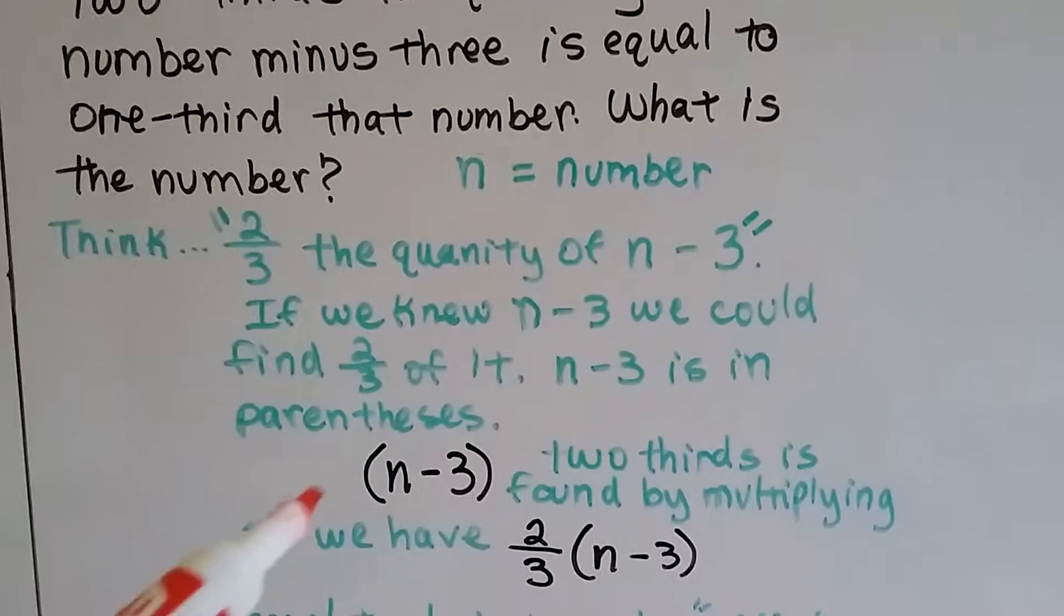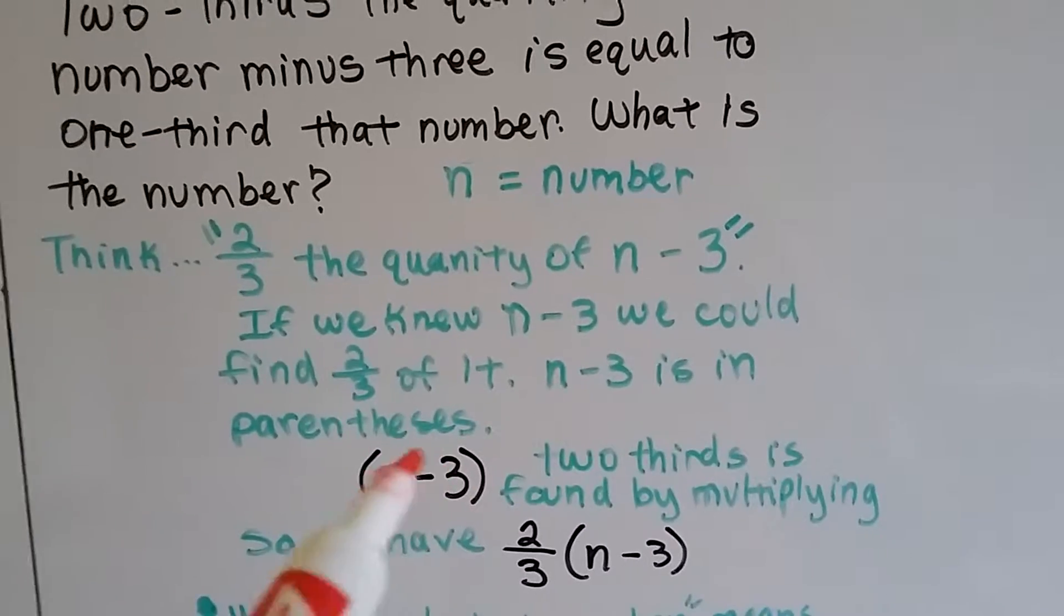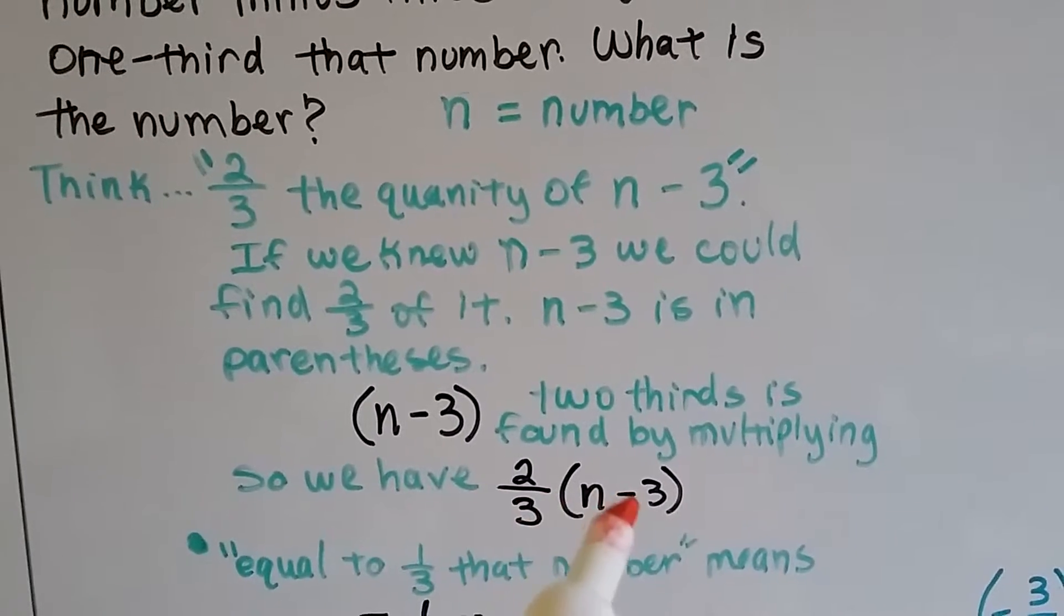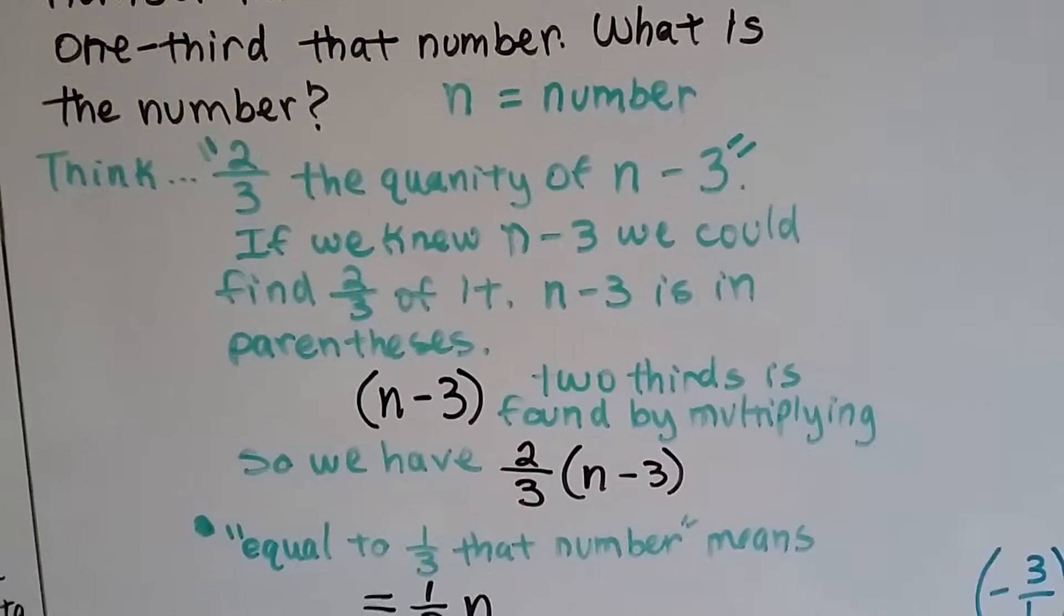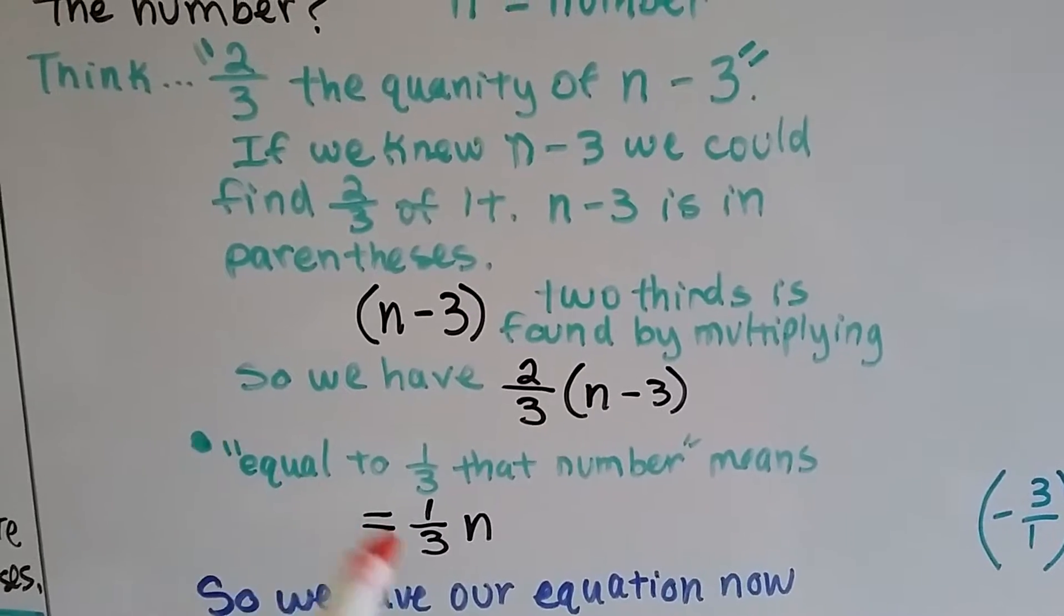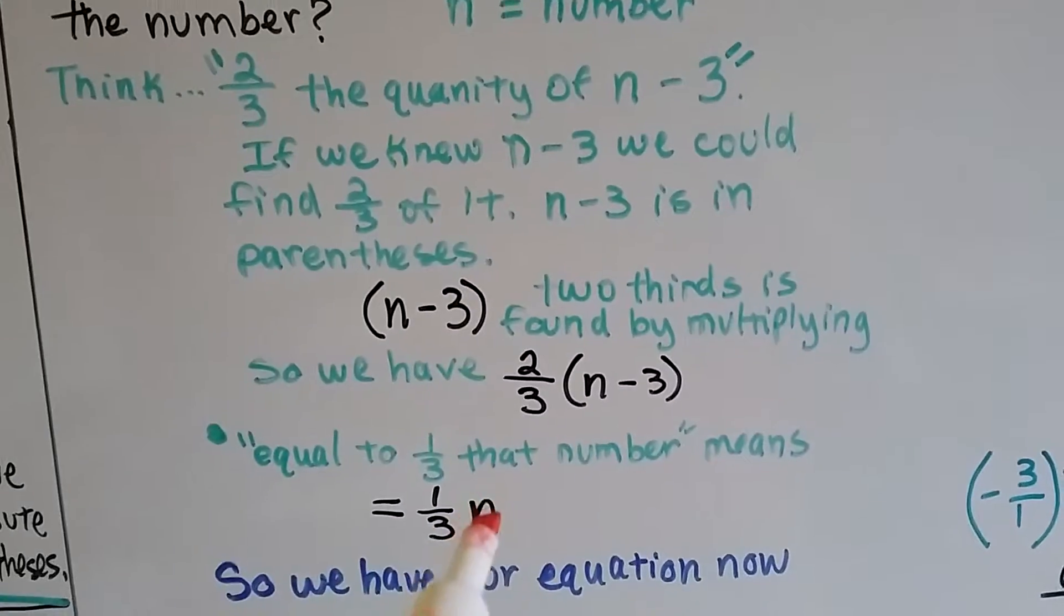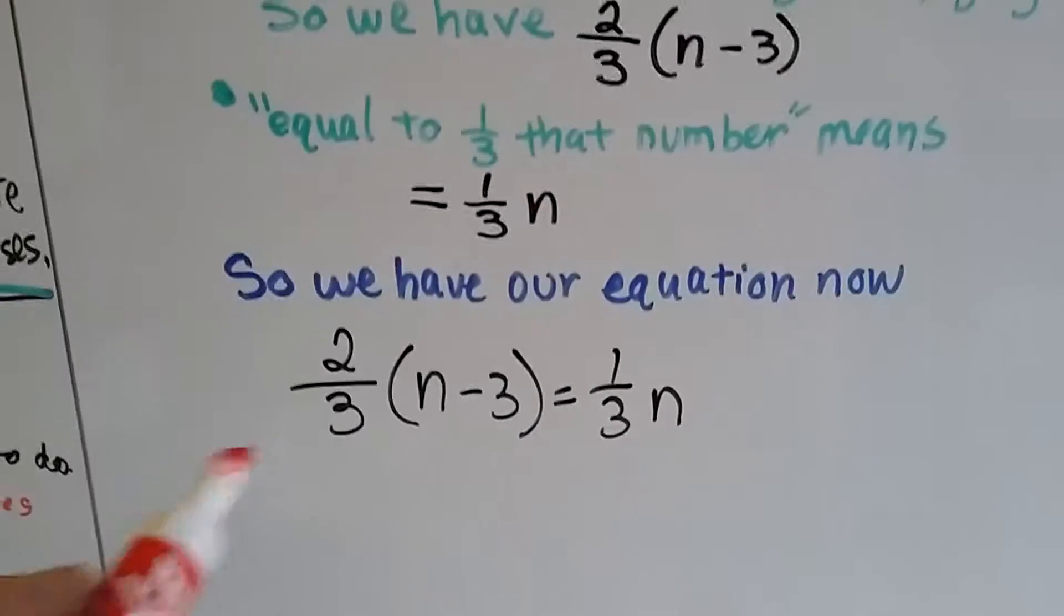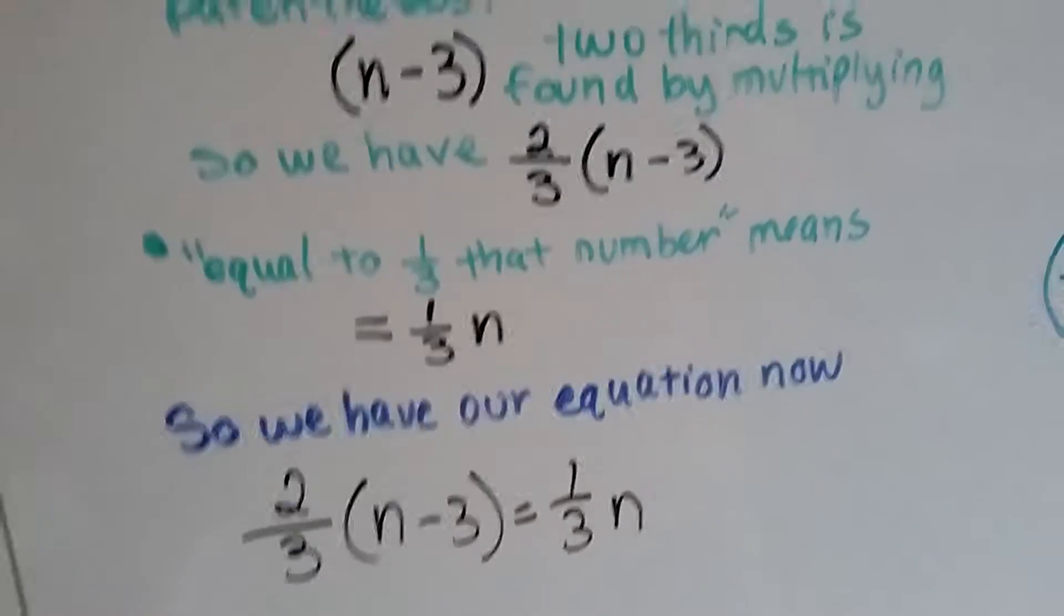So, 2 thirds is found by multiplying. To find 2 thirds of this n minus 3, that tells me we need to multiply 2 thirds to the n minus 3. So, now we've got it on the outside of the parentheses like that. And then it says equal to 1 third that number. So, we know the equal sign and then 1 third of that number, number is n. So, it's 1 third of n. Now we have our equation. We've got 2 thirds and then n minus 3 in parentheses equals 1 third n. Let's solve this guy.